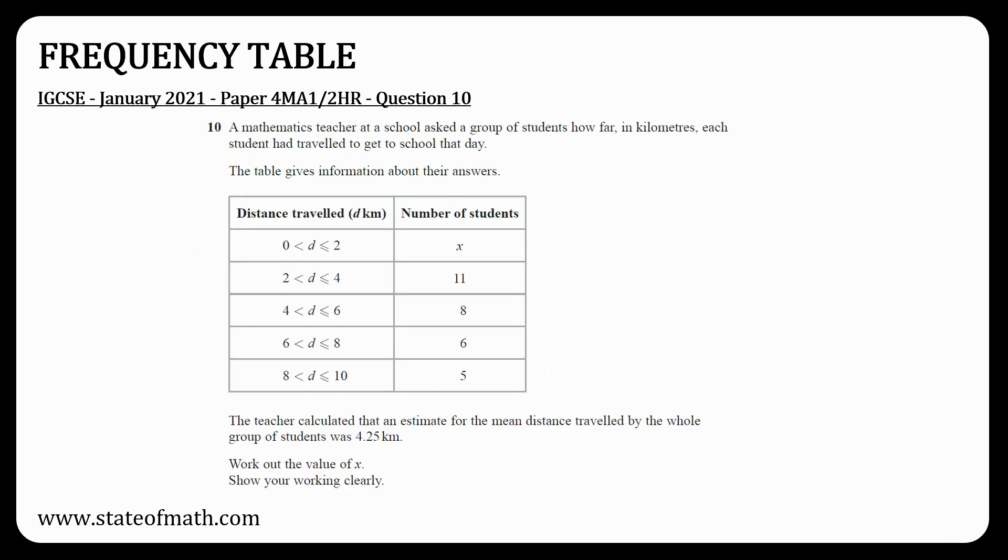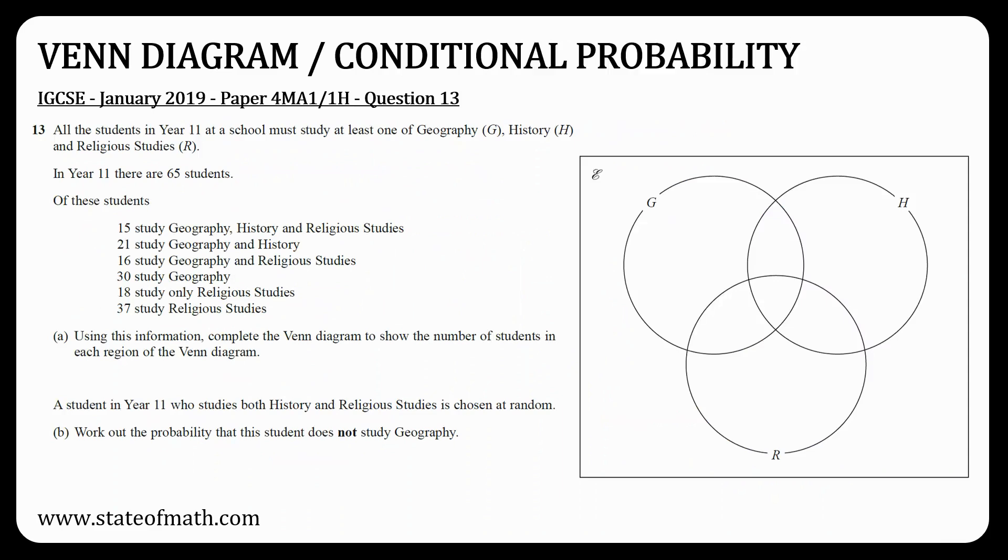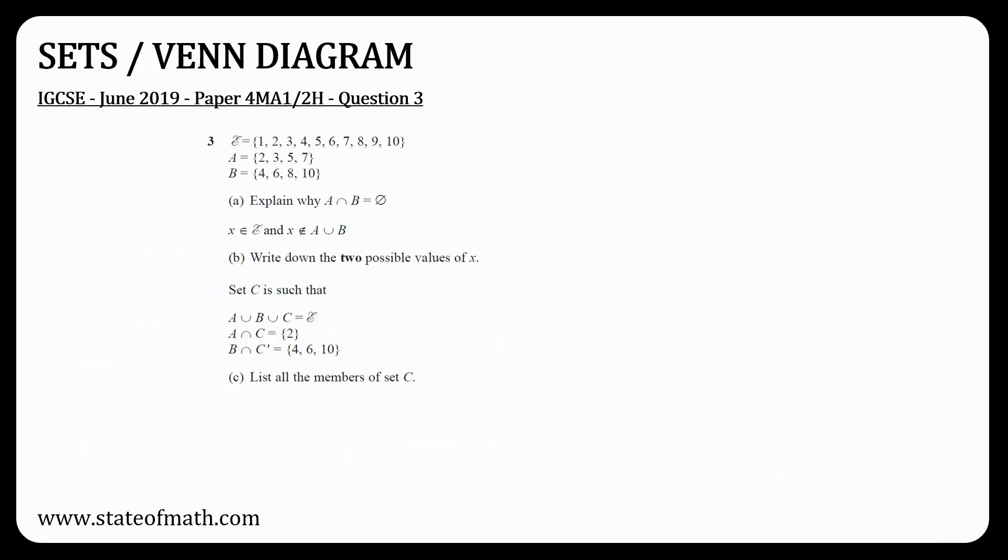Also for statistics, you could get a grouped frequency table. Remember, when you are calculating the mean, you should use the midpoint of each category. A Venn diagram question with two or three sets could appear that can either involve shading or finding probabilities. Also, the probability question that appeared in paper 1 did not ask for conditional probability, so a question like this could combine these two topics. You could also get a question on sets where a Venn diagram could be useful.